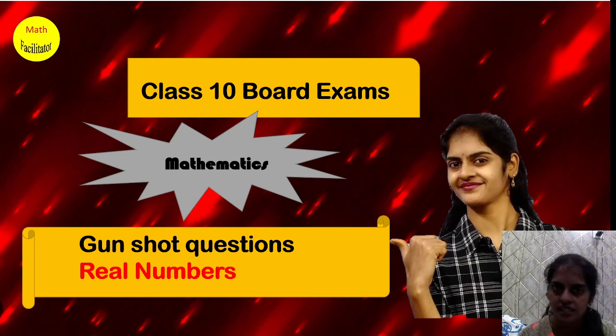And now chapter-wise gunshot questions we have started. So each chapter I have already told you, there are 3 to 5 questions. Here in one chapter, like real numbers, there are 6 questions.